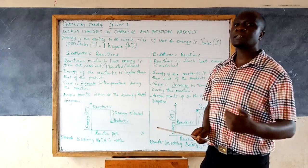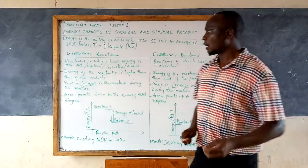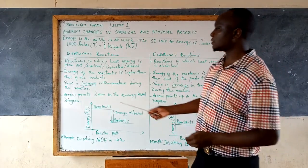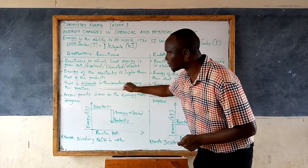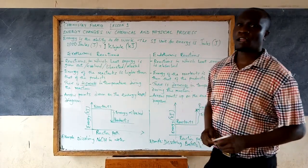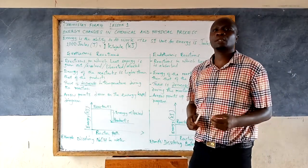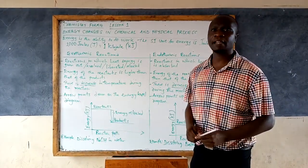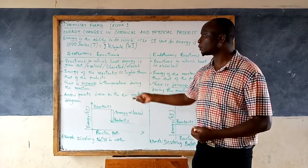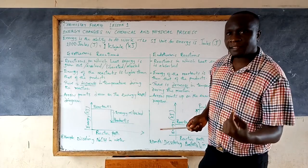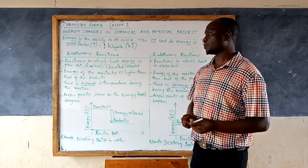That means heat energy was given out during the reaction. Another parameter you can use is temperature — if there is an increase in temperature, then that reaction is exothermic. The increase in temperature is due to the heat energy that has been given out by the reaction. The heat that has been liberated causes a rise in temperature, so when the temperature rises or increases, it means the reaction is exothermic.